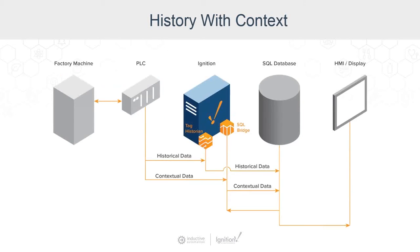If you look at a graphic of this, we have of course the PLC, Ignition communicating to that, and we can be logging the historical data from the historian into a SQL database. We can be doing that in parallel, and then with the SQL Bridge module and the transaction group, when certain events happen, we can log them separately and relate the two together when we bring it back onto a display.